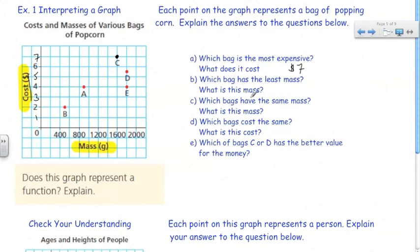B, which bag has the least mass? What is this mass? Now we're looking at our horizontal axis or x-axis. The least mass is going to be the one that's furthest to the left. That's bag B and it ends up right here. Somewhere between 400 and 800. If we look at this, every second line or every second unit, they're jumping 400 grams. So, this one here will be 200 grams. Every line or every unit is an increment of 200.